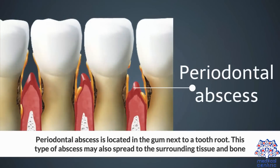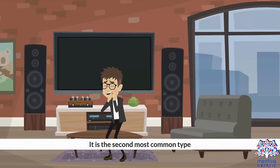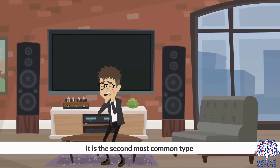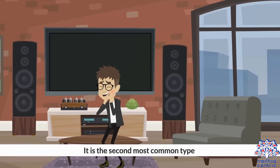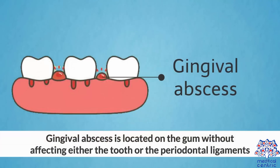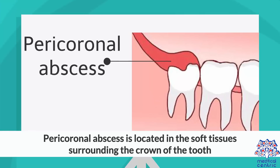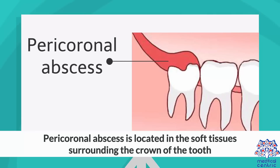Periodontal abscess is located in the gum next to a tooth root. This type of abscess may also spread to the surrounding tissue and bone. It is the second most common type. Gingival abscess is located on the gum without affecting either the tooth or the periodontal ligaments. Pericoronal abscess is located in the soft tissues surrounding the crown of the tooth.